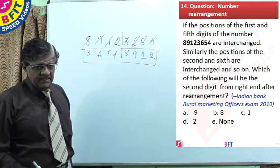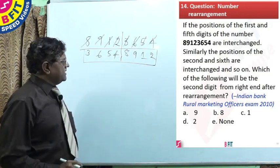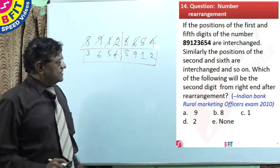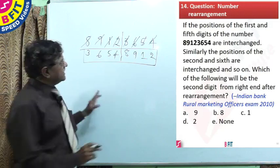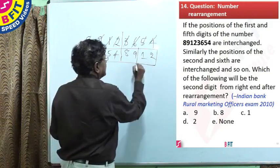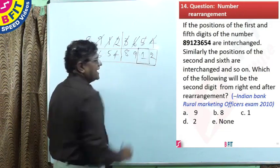Now, what is the question asking? Which of the following will be the second digit from the right end after rearrangement? This is the right end, second digit is 1. So, the answer is 1.